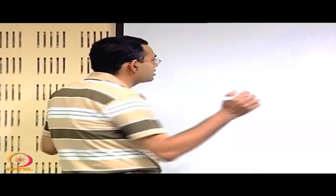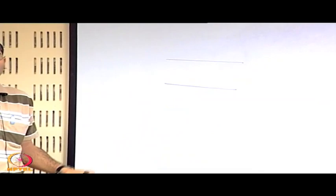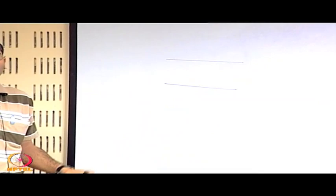Before going into that, let us recapitulate how the different length scales are involved in the process of turbulence. We were talking about the concept of energy cascading in our initial discussion. Let us revisit it with an example — not an example of turbulent flow, but consider that you have two plates with a big piece of stone in between them.